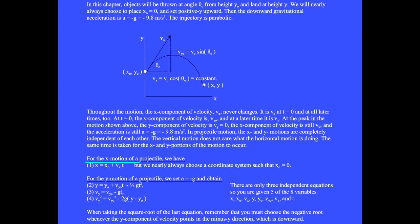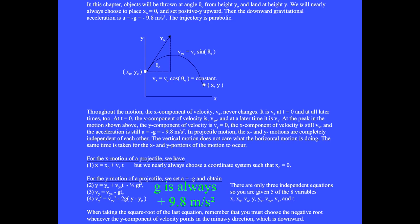For the x motion of a projectile, we have equation 1: x equals x sub 0 plus v sub x times t, but we nearly always choose a coordinate system such that x sub 0 equals 0. For the y motion of a projectile, we set a equal minus g and obtain equation 2: y equals y sub 0 plus v sub y 0 t minus one half g t squared, where g is the positive number 9.8 meters per second squared. This gives us the initial height, the final height, the y component of the initial velocity, and time t.